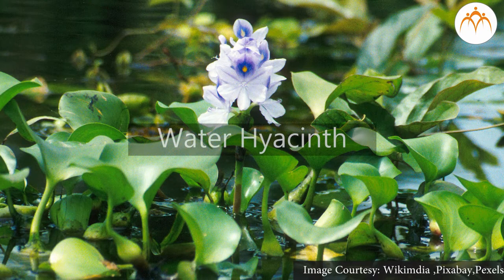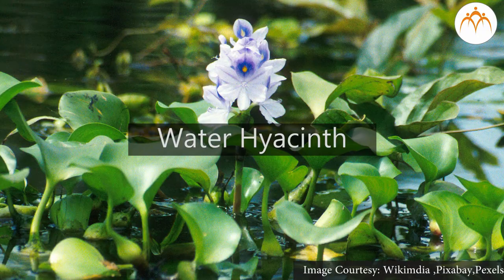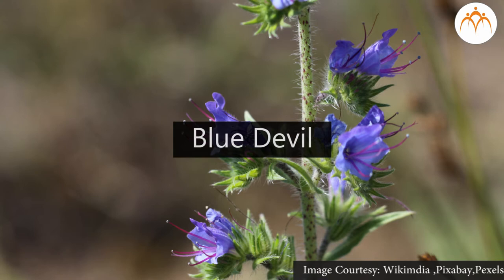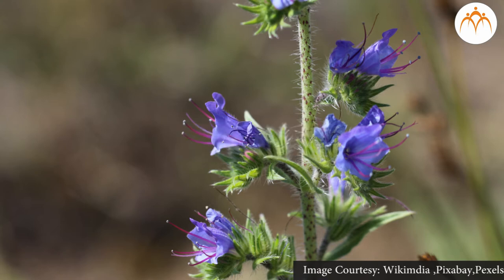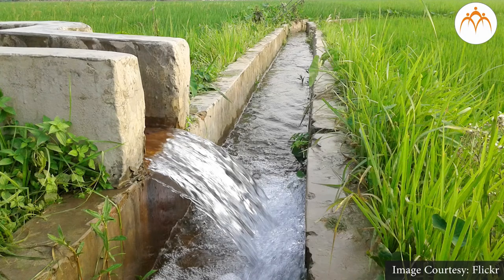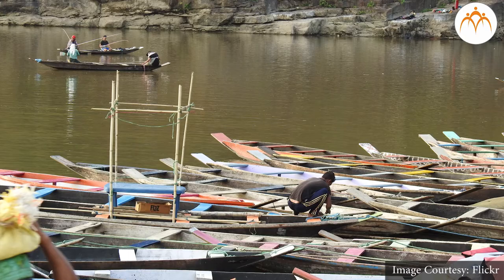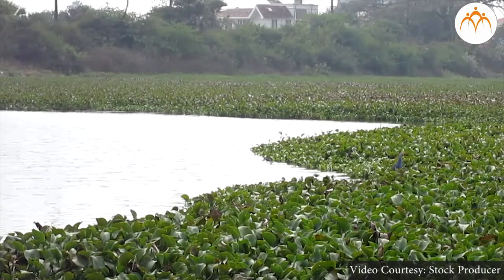Water hyacinth first originated in Brazil but it spread all over the world. It actually came as an ornamental plant in West Bengal and spread on a very large scale. It is known as the terror of Bengal, blue devil, and harmful plant. It not only affects irrigation, water transport, and power generation but also production of fishes, water plants, and produces mosquitoes on a big scale.